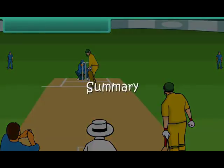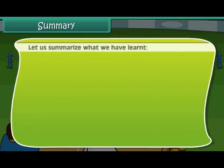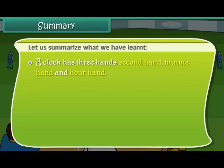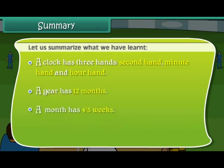Let us summarize what we have learned. A clock has 3 hands: second hand, minute hand, and hour hand. A year has 12 months. A month has 4 or 5 weeks. There are 7 days in a week.